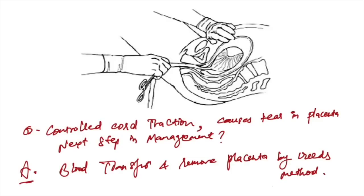Controlled cord traction causes tear in placenta with heavy bleeding. Next step in management: we will do blood transfusion and remove the placenta by Credé's method.